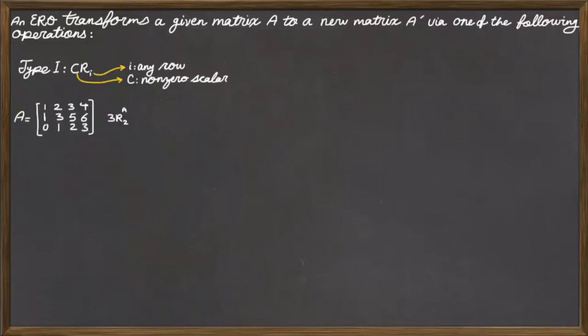So make sure that you are familiar with this convention before you move on to the next lesson. If I implement this step, I get matrix A', in which the second row is 3, 9, 15, and 18, which is the second row of matrix A multiplied by 3. In matrix A', however, the first and the third row are the same as matrix A.